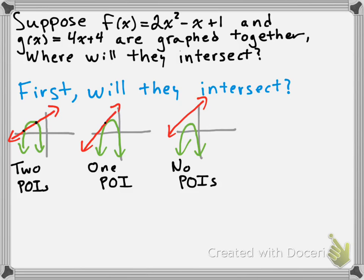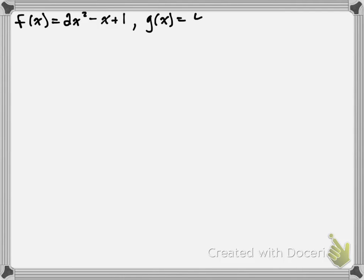We're going to consider first whether there are any points of intersection, and also find what they are. We're looking for the points of intersection of f(x) = 2x² - x + 1 and g(x) = 4x + 4. At the point of intersection, f(x) should be equal to g(x), meaning the y-value of f(x) will be the same as the y-value of g(x). That makes sense because we're talking about the same point — both functions have that point on them.